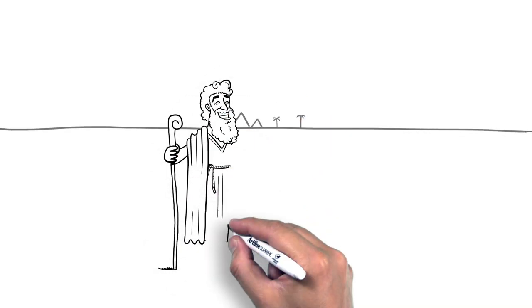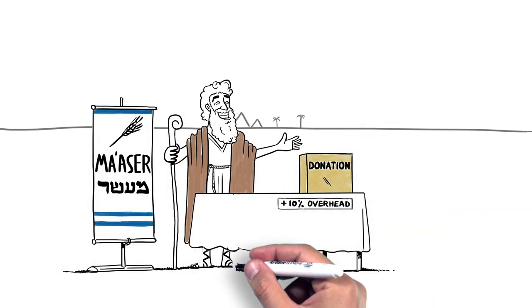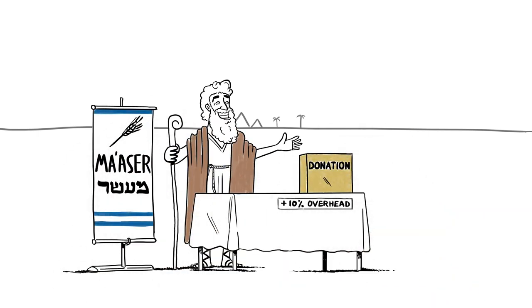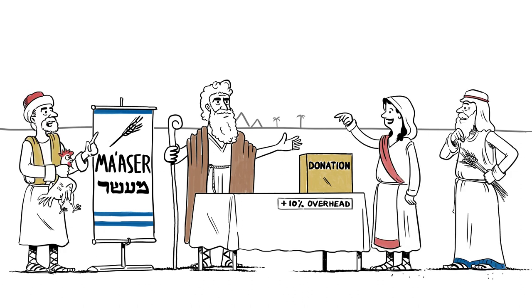The history of Israeli philanthropy goes back to Biblical times, when Moses asked the Jewish people for Maser to build the nation. They pitched in with gold, livestock, crops, and opinions.